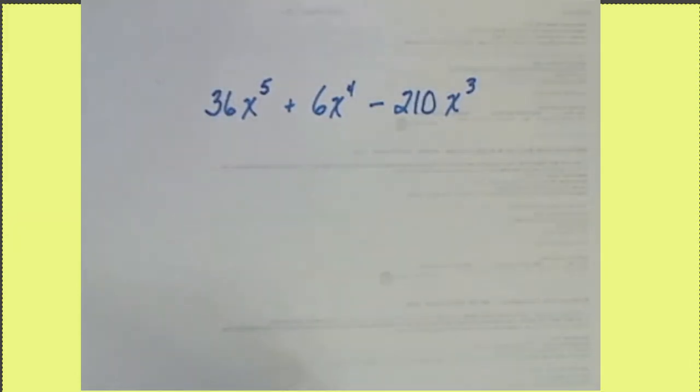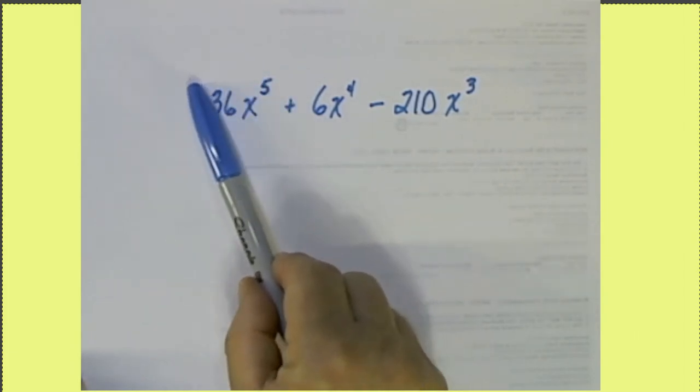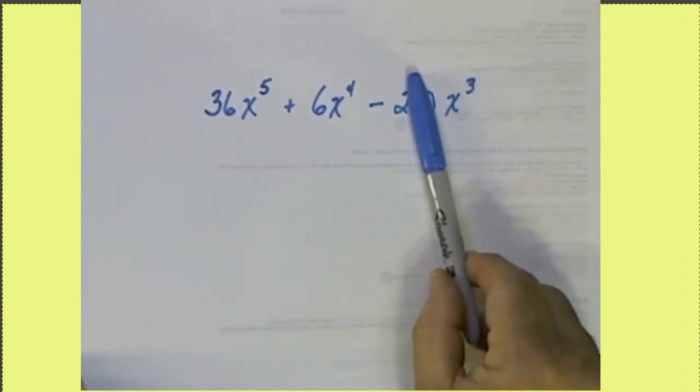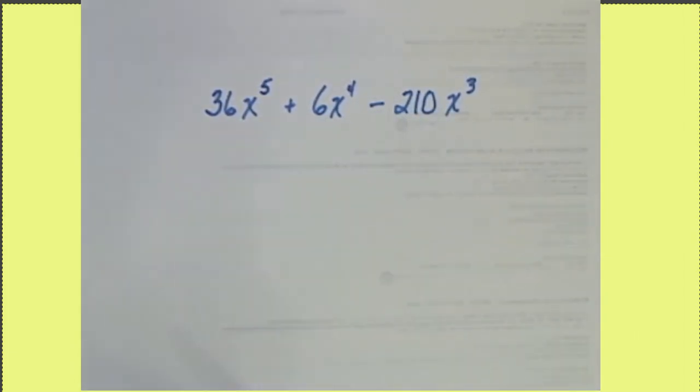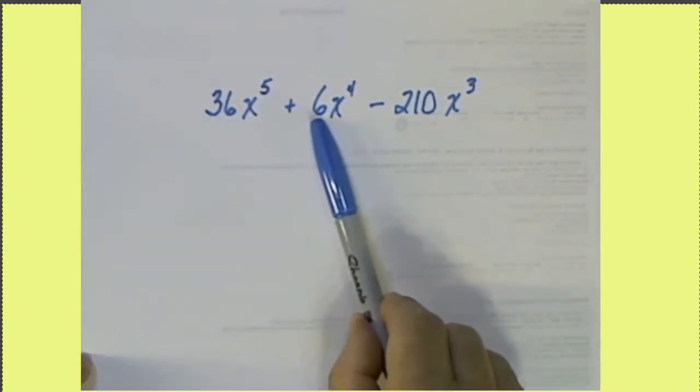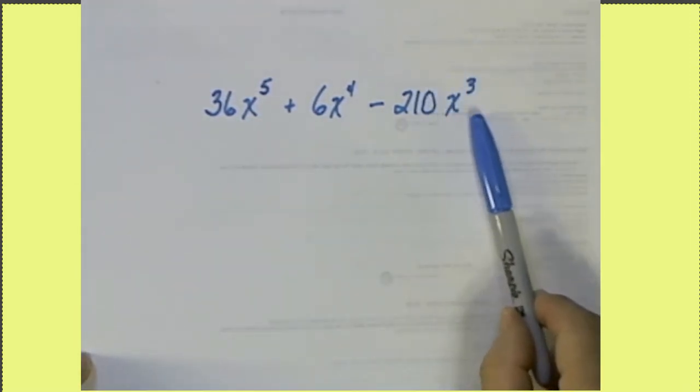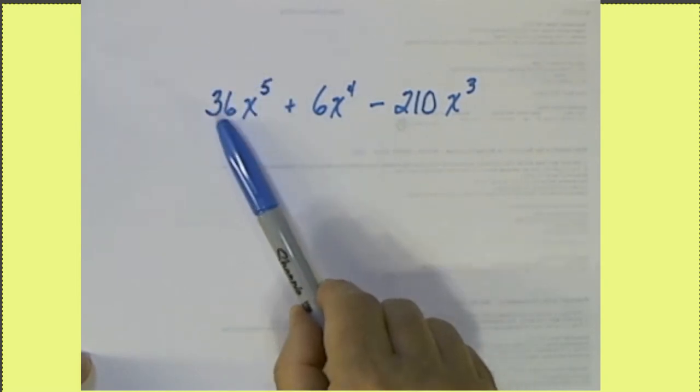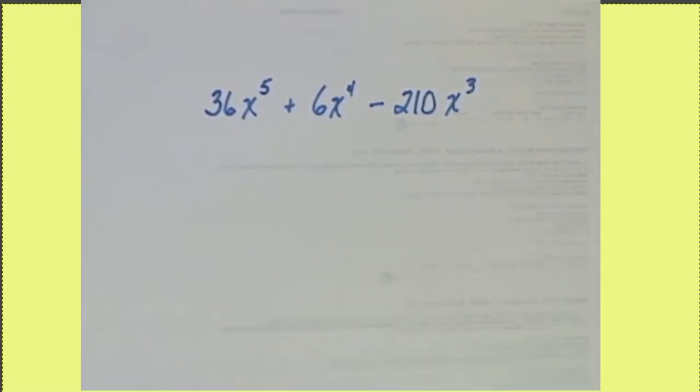So here's an example. Our first thing is to look for a common factor, the greatest common factor in each of these terms. Now there's an X cubed in each one of these, so we could factor out X cubed.